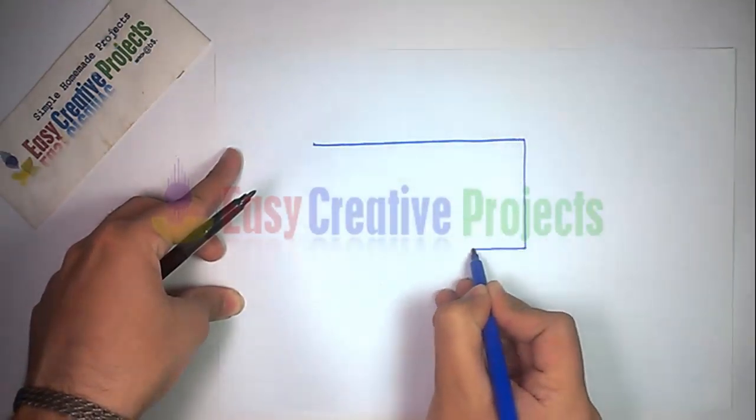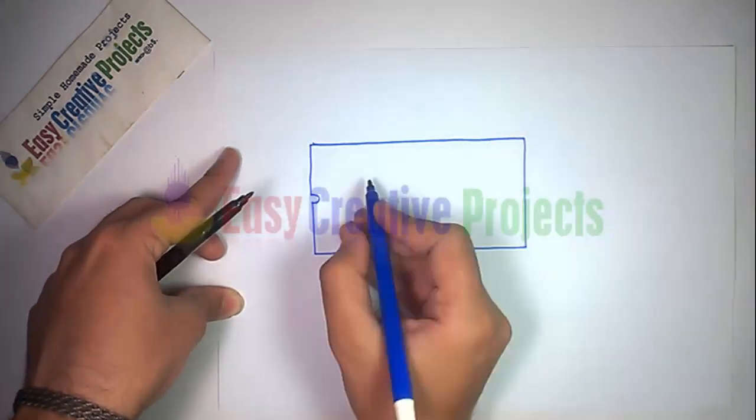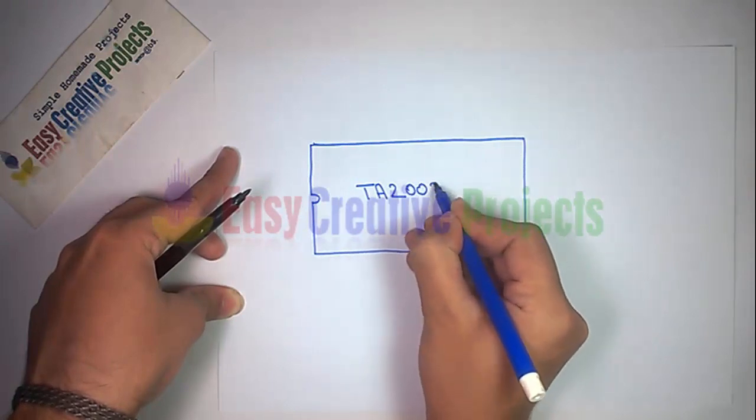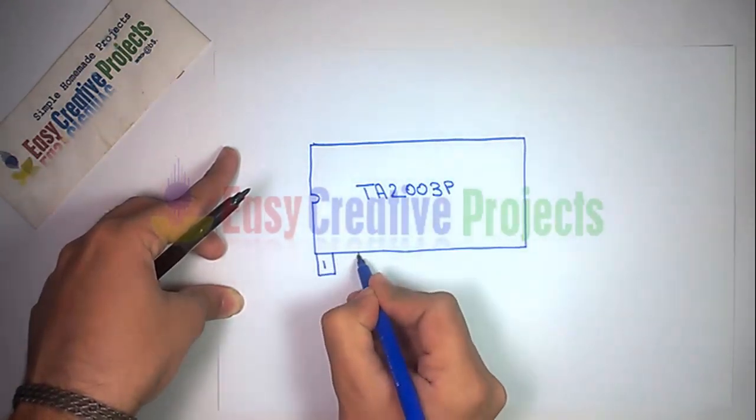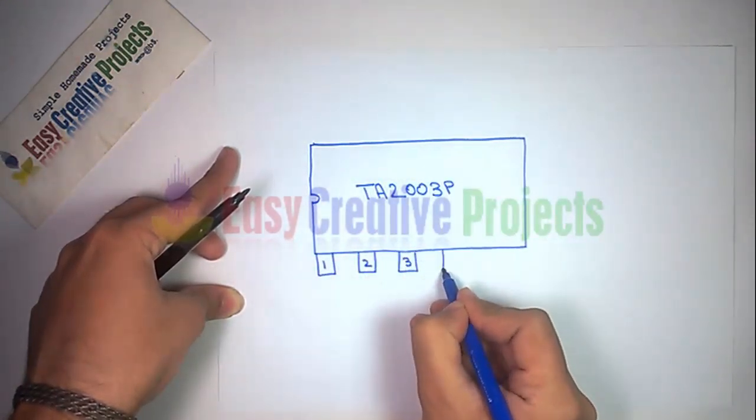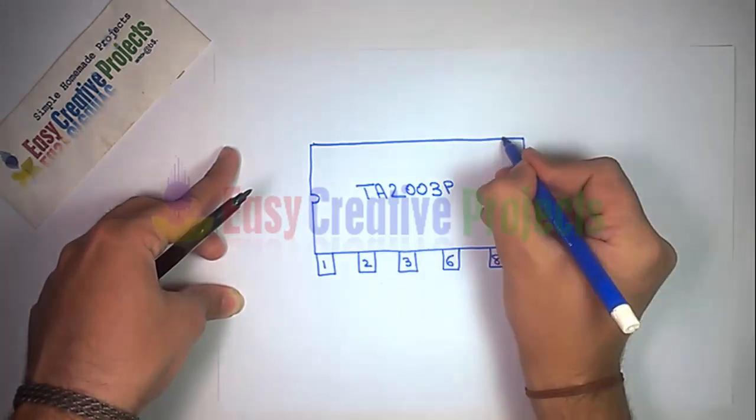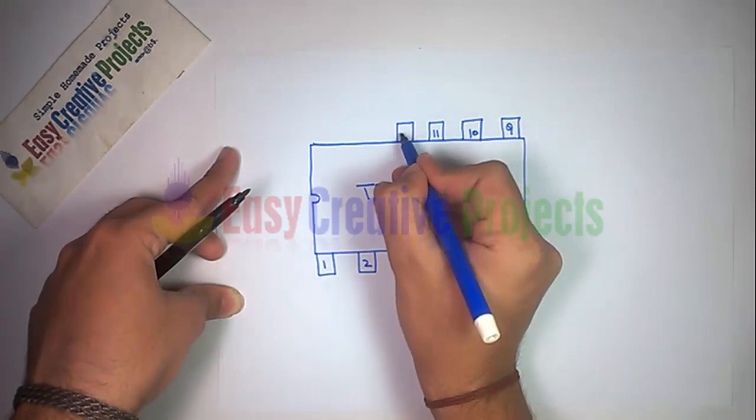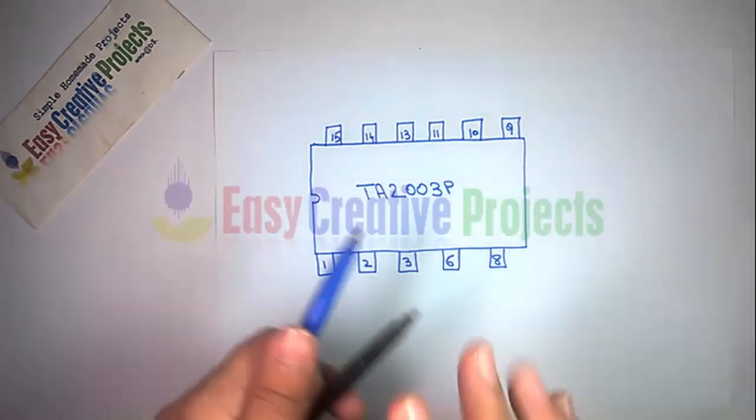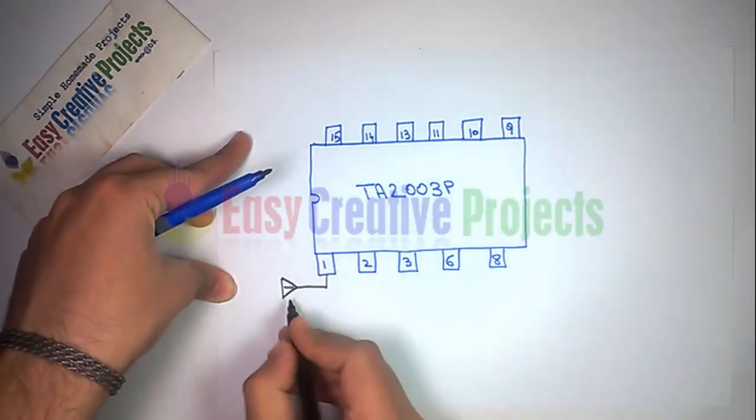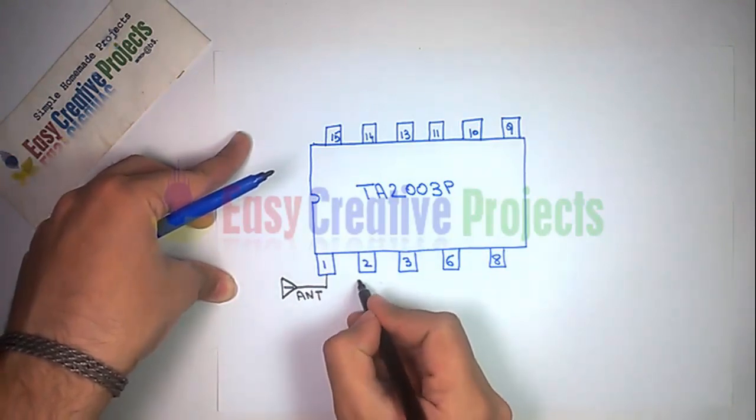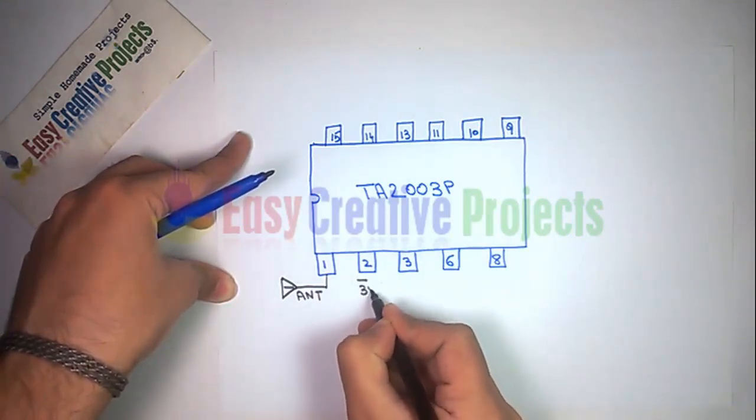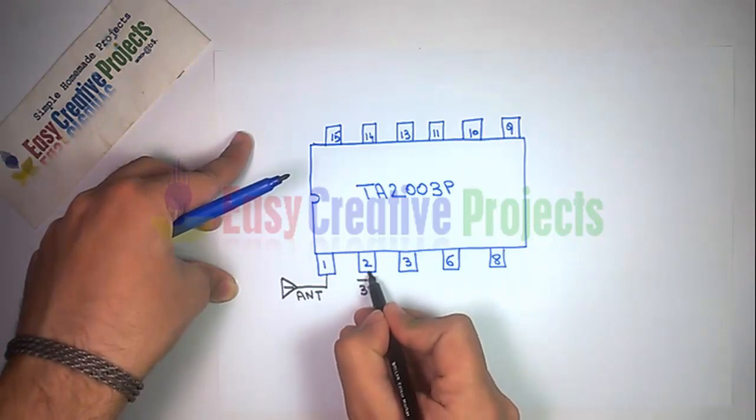TA2003P IC has 16 pins. Connect antenna with pin 1. Connect 3-volt negative power with pin 2.